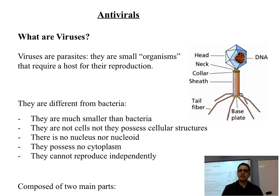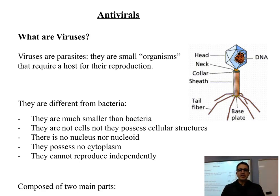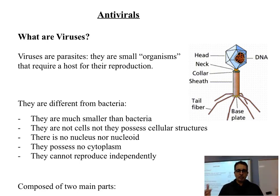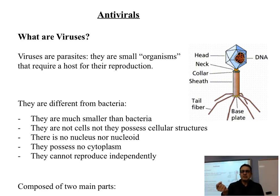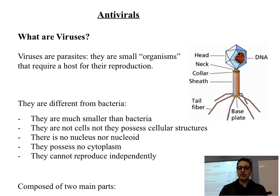They're much smaller. They do not have any cellular structures — they don't have a nucleus, they don't have a nucleoid, they have no cytoplasm. And most importantly, they cannot reproduce independently. Basically, a virus has two main parts: a protein coat and some genetic code, some type of RNA or DNA.